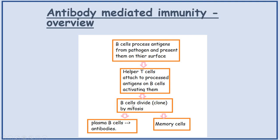Then the B-cells clone by mitosis and differentiate to form plasma B-cells, which are the ones that secrete antibodies. Or memory B-cells, which stay in the blood and remember the same antigen again.